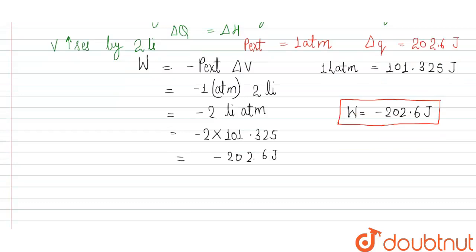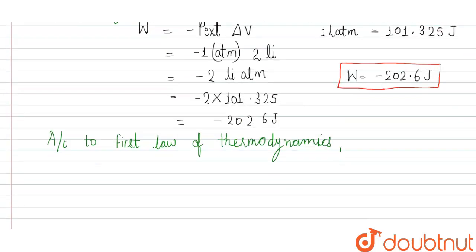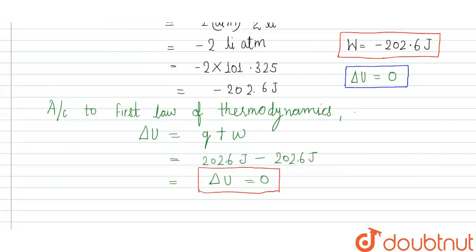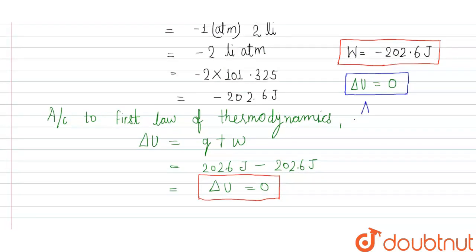According to the first law of thermodynamics, ΔU = q + w. Here, ΔU is change in internal energy, q is heat, and w is work. Our heat is 202.6 joules and work is -202.6 joules, so ΔU = 202.6 + (-202.6) = 0. And change in enthalpy ΔH = 202.6 joules.